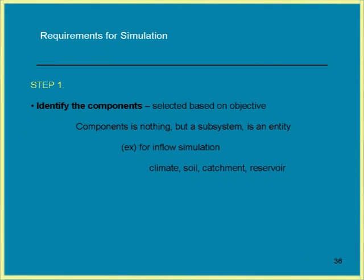What are the steps required for simulation? First, we have to identify the components and identify the variables. There are three important terms we use in water resources: variable, parameter, and interrelationship. A variable is a physical quantity which varies with respect to time, and a parameter is a physical quantity which does not vary with respect to time. For example, inflow into the reservoir is a variable, while the carrying capacity of a canal or the capacity of the reservoir is a parameter.